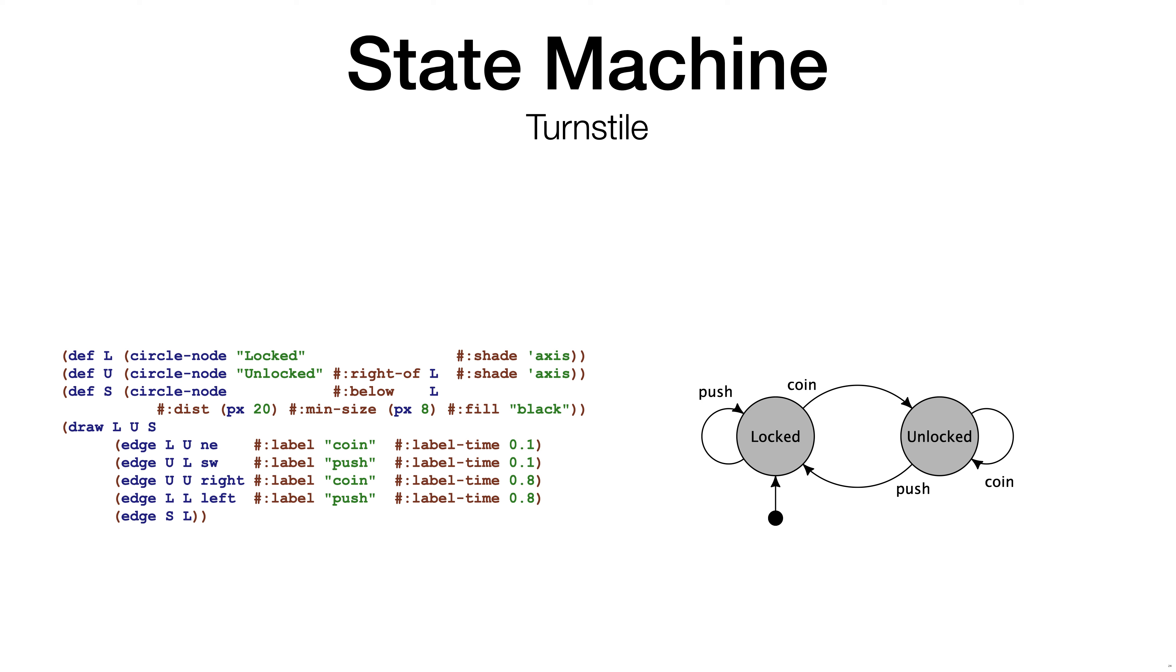In the code, we see we have a number of circle nodes, one for each state. In the draw statement, we, of course, draw the circle nodes, but you also draw edges from state to state.